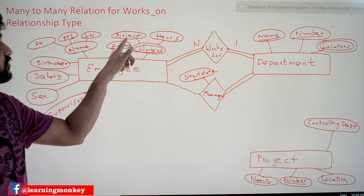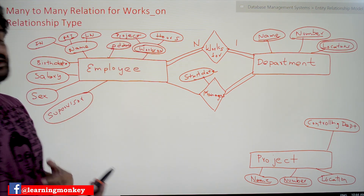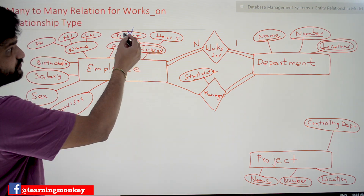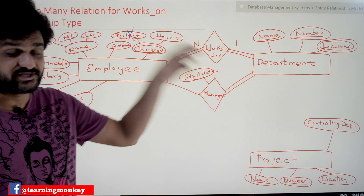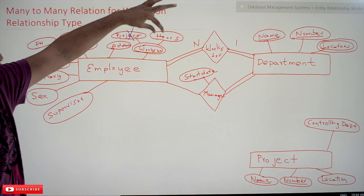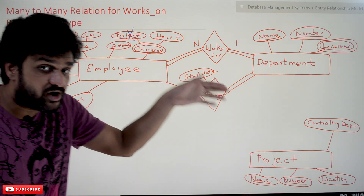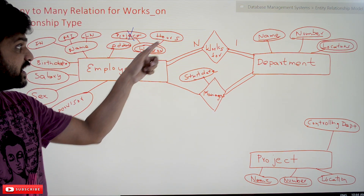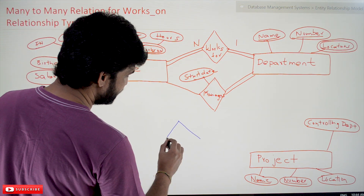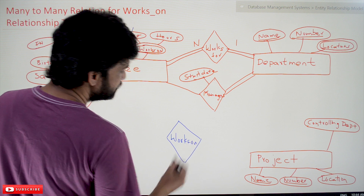The relationship name is 'works on.' The 'works on' had attributes — it is a multi-valued attribute. Since the project entity itself defines the works-on concept, we don't need to represent project separately. We are left with the 'hours' attribute, which belongs to this 'works on.' So 'hours' is going to be an attribute of the relationship type. 'Works on' is the new relationship type that has been identified.